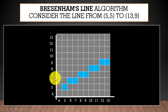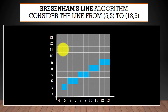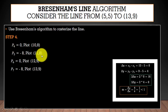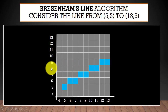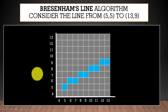Now we plot all these points. You can see point (10,8) — x is 10 and y is 8. Next point (11,8) — x is 11, y is 8. Next point (12,9) — x is 12, y is 9. Next point (13,9) — x is 13, y is 9. We were drawing a line from (5,5) to (13,9), and now we can draw the line connecting all these plotted points using Bresenham's algorithm. This algorithm is simple, faster, and more accurate than DDA.